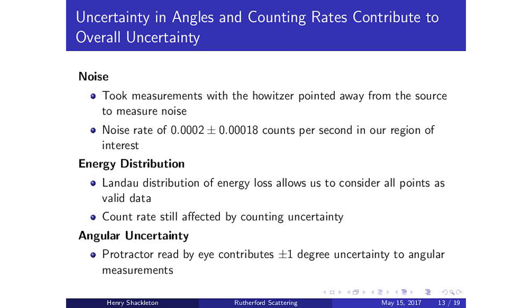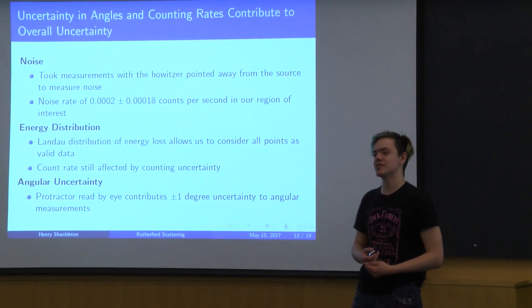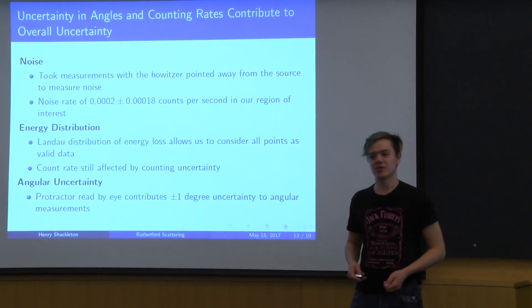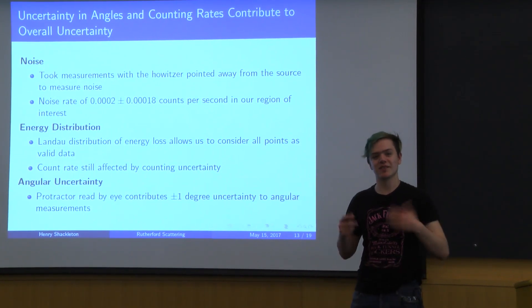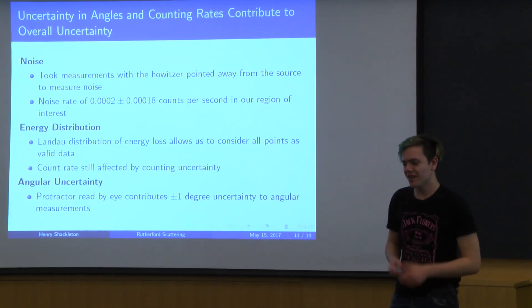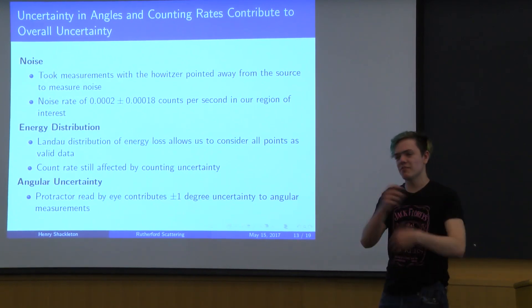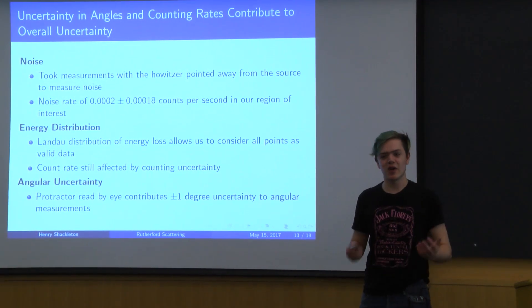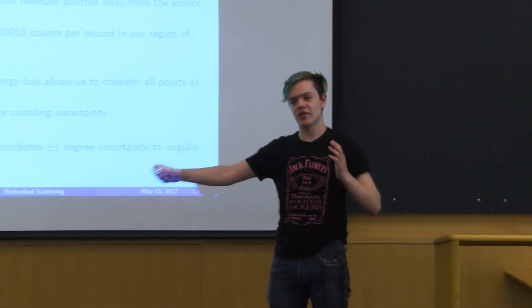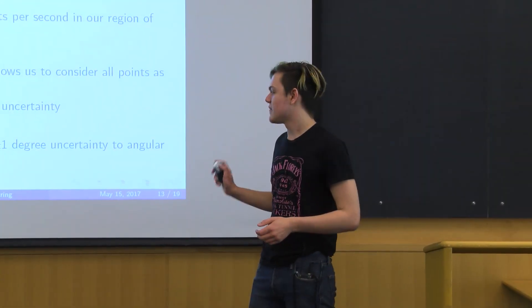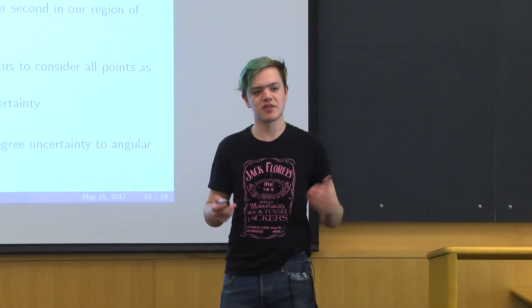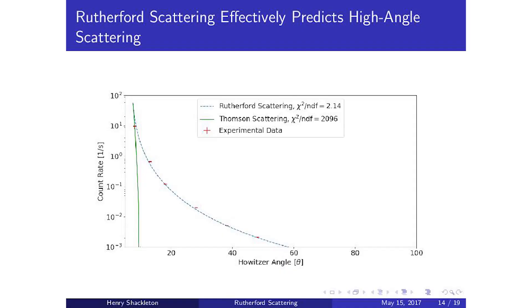Therefore, we conclude we can use all detected points as valid scattering data, subject to counting uncertainty. We also have angular uncertainty: we read howitzer angles by eye from a protractor and assign a plus or minus one degree uncertainty. We take all these measurements, divide by collection time to get count rates, graph this as a function of measured angle, and fit to both the convolved Rutherford and Thomson models.